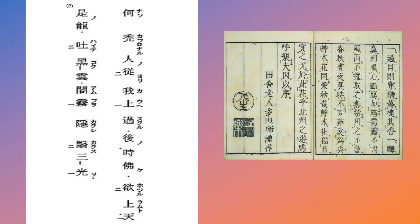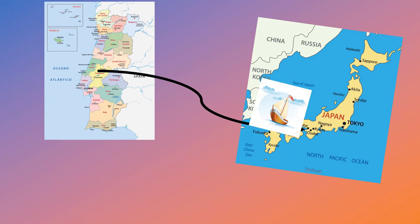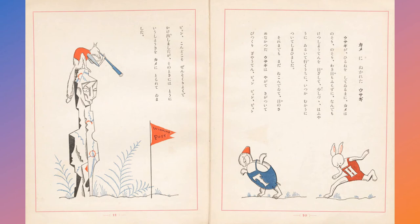As we proceed towards the Late Middle Japanese period, we see more Portuguese and Dutch influence come via the missionaries, and as a result, Heike Monogatari and Aesop no Fabulas, or Aesop's Fables, were translated from Latin into Japanese.